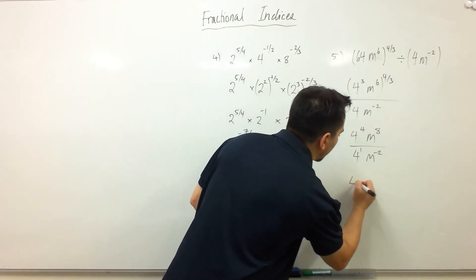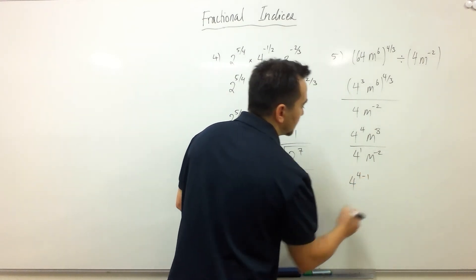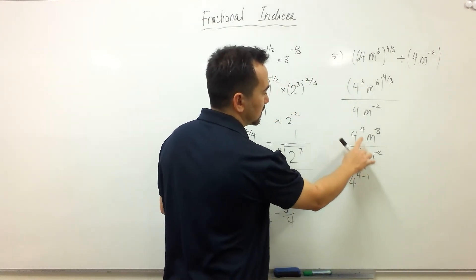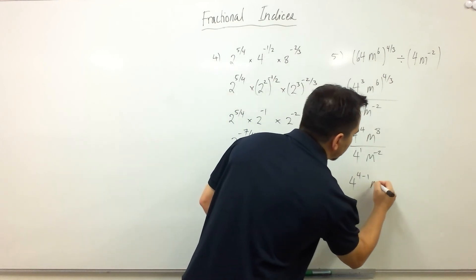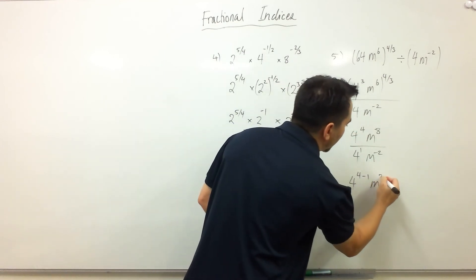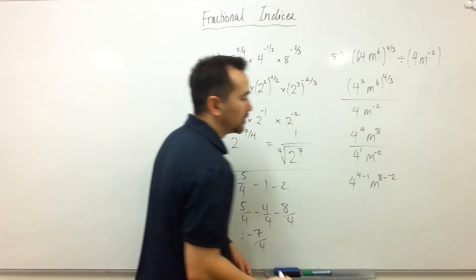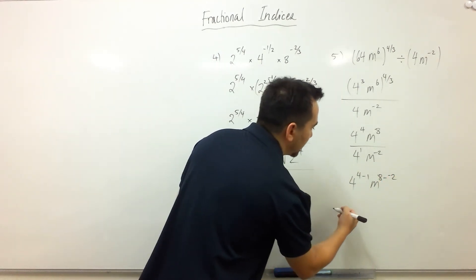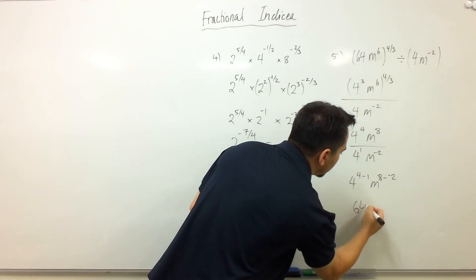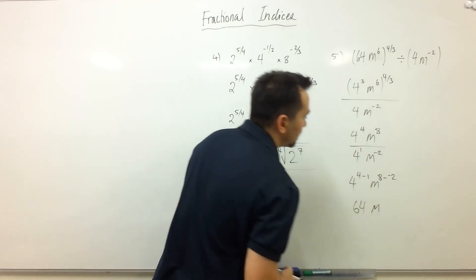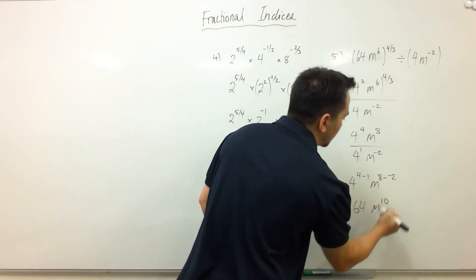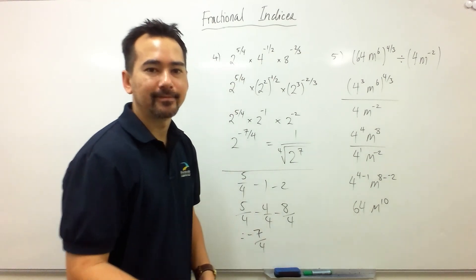So we have 4 to the power 4 subtract 1, moving this up. And the same with the M's, I have M to the power 8. When I move the negative 2 up, I have to subtract negative 2. And so my final answer is 4 to the power 3, which is 64, M to the power 10. And that's it.